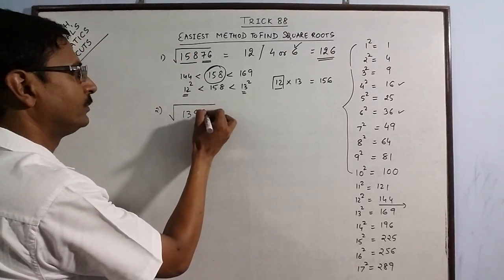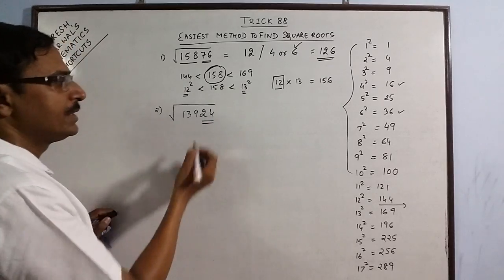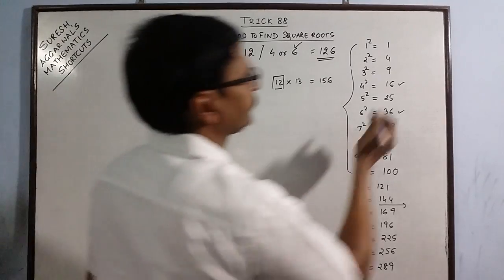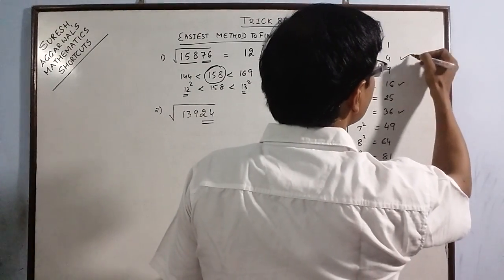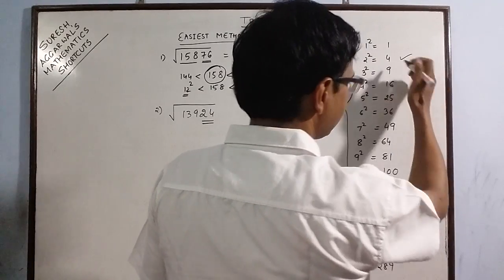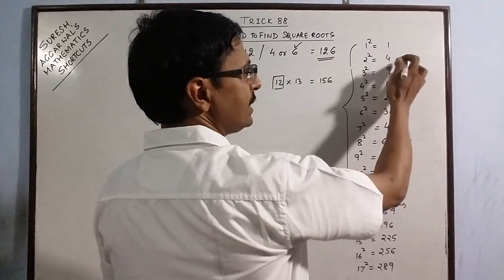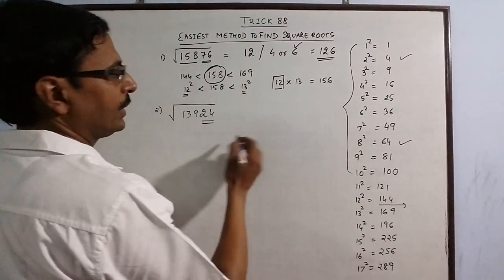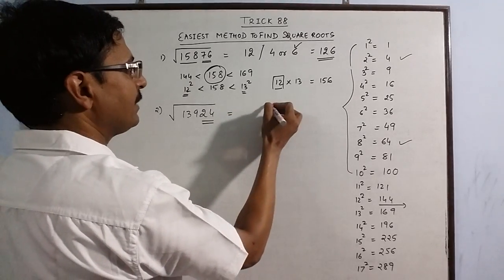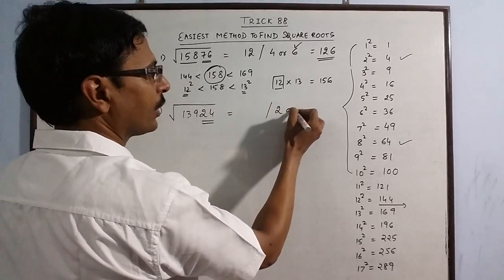Say 13924. Now 24, observe the unit digit 4. 4 is present in 2 square and 4 is present in 8 square. So the second part of the answer is either 2 or 8.